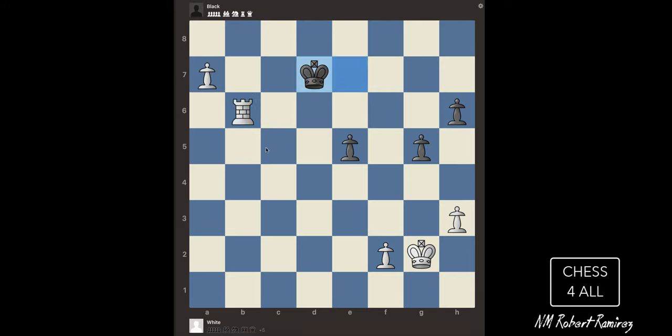Now let's say that instead of the king going over here, the king goes back. Well, it's the same thing. Check. He goes down. And checkmate.